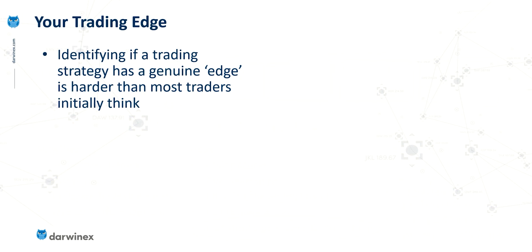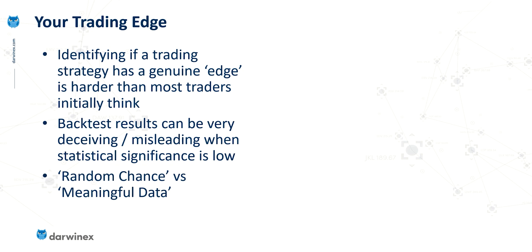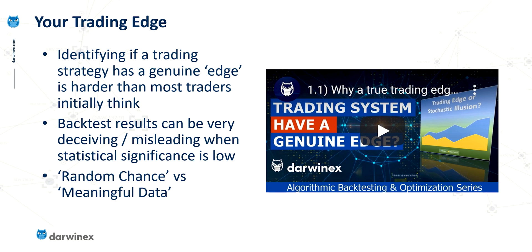Let's now start to look at some of the things that I consider to be most important in terms of making a positive impact on this process. The first is when you're trying to identify if a trading strategy has a genuine edge or not, and this is actually a lot harder than many traders think. Backtest results can be extremely deceiving, especially when statistical significance is low — when this is the case, random chance starts to be more dominant than the meaningful data and information you're getting from your backtest. The very first video I put together for DarwinX was on this exact subject: determining whether or not the trading system you're looking at has a genuine edge or not.